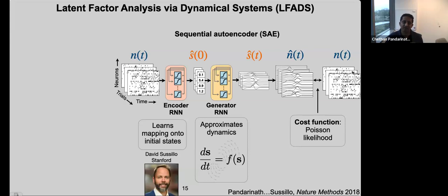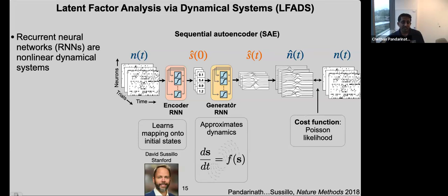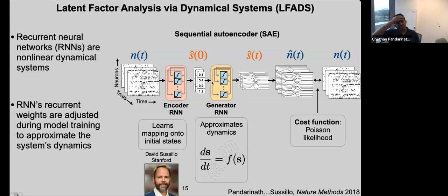For the cost function, we're not trying to reproduce the spiking activity exactly, because some of that information is noise or variability we don't want to model. Instead, for each neuron, we try to predict a firing rate — a smooth function that's consistent with the spiking activity — and maximize the Poisson likelihood of that spiking activity. Recurrent neural networks are nonlinear dynamical systems, making them a reasonable choice for approximating the dynamics of a system.